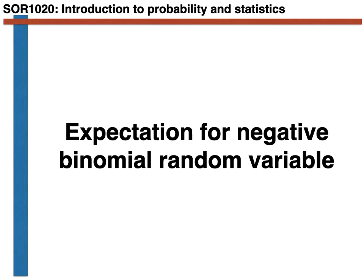The only random variable that we have introduced and that we have not yet found the expectation for is the negative binomial random variable. We will thus remedy this in the video that follows. Before we get onto that, however, let's first briefly revise some of these other expectations we have calculated.